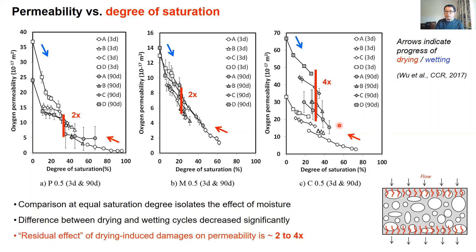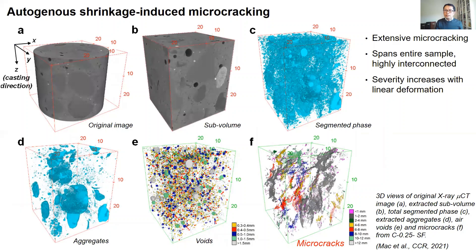So this is the effect of drying-induced microcracks, which we know are shallow cracks concentrated near the first few millimeters of the exposed surface. The question now is: what about autogenous shrinkage microcracking, which is a more extensive form of microcracking — larger, highly interconnected, and spanning the entire sample? We would expect the effect of these microcracks on transport to be much greater, and indeed that is the case.